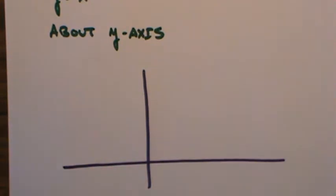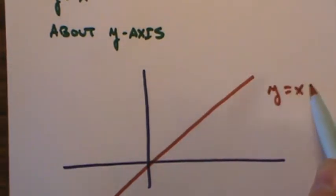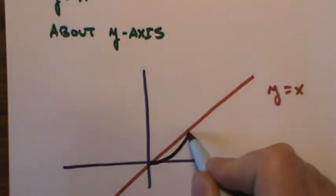Here's the xy plane, the line y equals x, and y equals x squared. y equals x squared would look something like this.